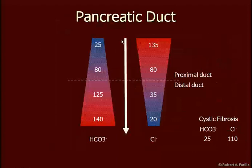As we move down the duct, we see very low bicarbonate concentration close to plasma — about 25 milliequivalents per liter — which begins to increase as we move down the duct until we reach about 140 milliequivalents per liter exiting into the duodenum.